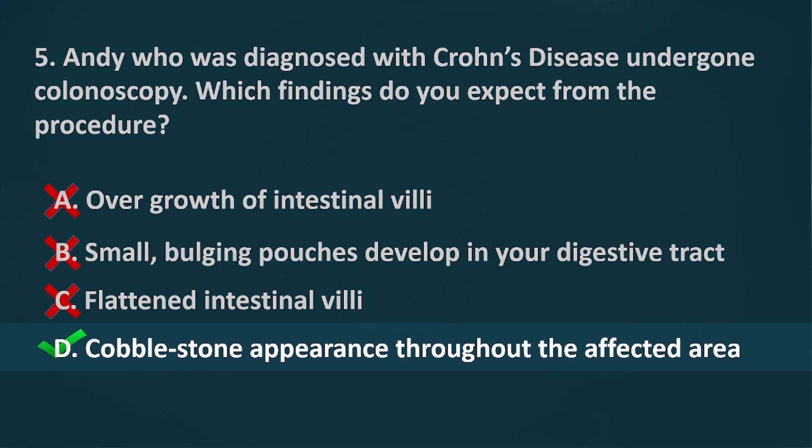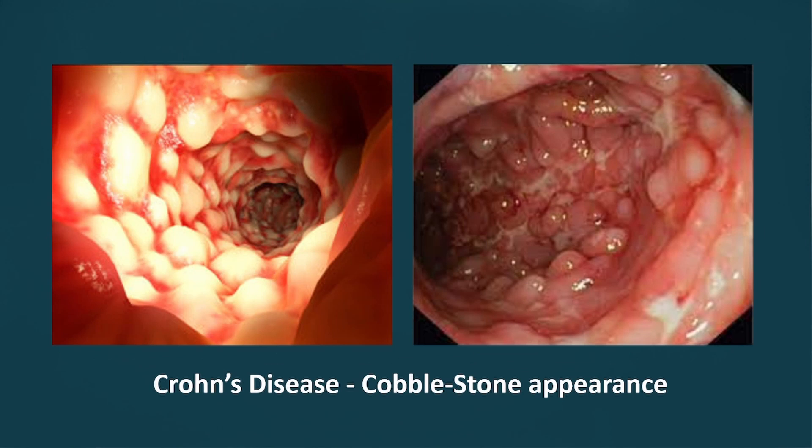The correct answer is Letter D, cobblestone appearance throughout the affected area. Crohn's disease can involve not only the colon but also the small intestine, and frequently presents with deep ulcers. The deep ulcers with a longitudinal array create a cobblestone appearance.